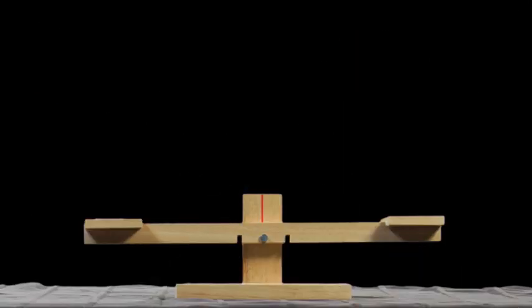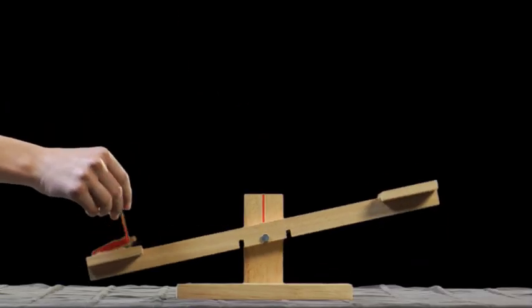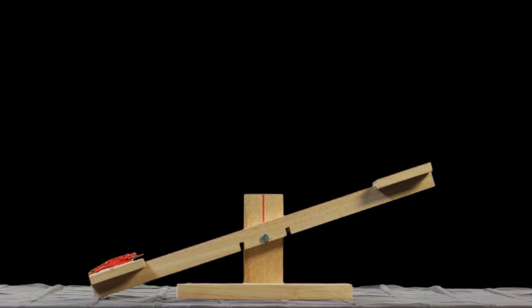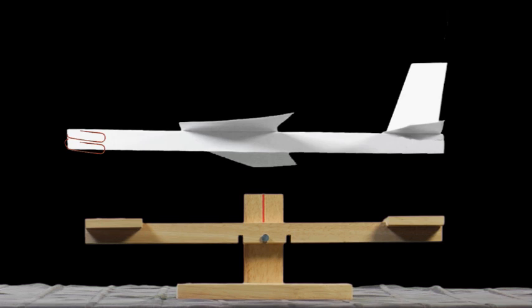If we look at the scale, we see that it is level and in balance. If we add more weight to one side, we see the scale tips and is no longer in balance. Because there is more weight on this side, the scale tips. Our plane is like the scale in that we also want it to be level during flight.